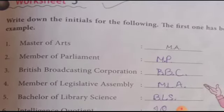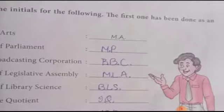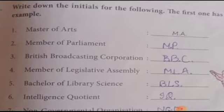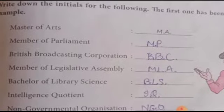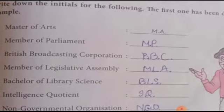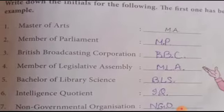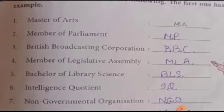Write down the initials for the following. The first one has been done as an example. Master of Art means M.A. — after M you have to give a full stop. Member of Parliament: M.P. British Broadcasting Corporation: B.B.C.